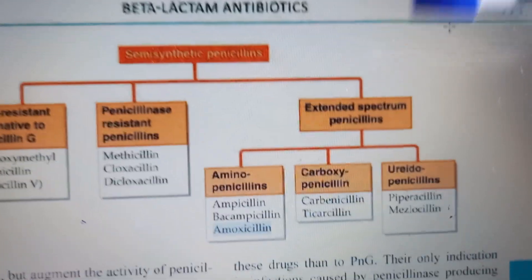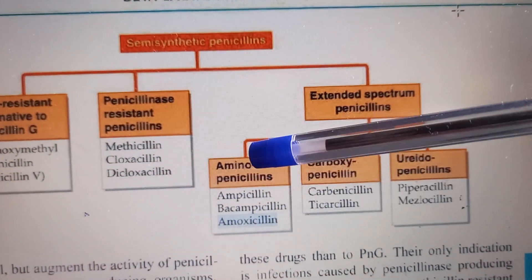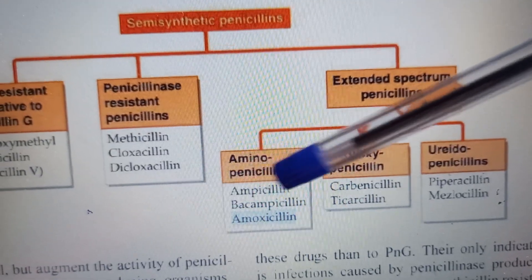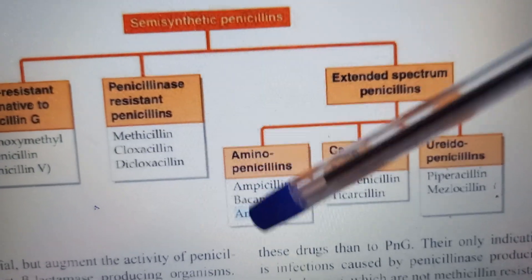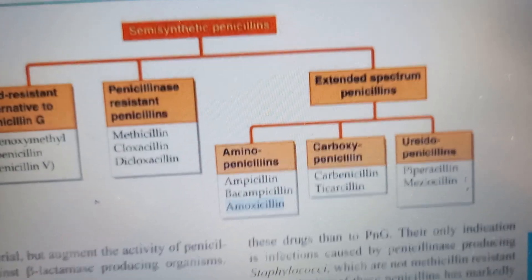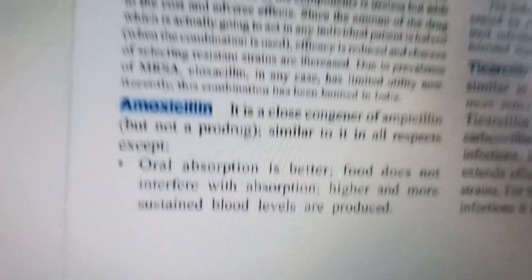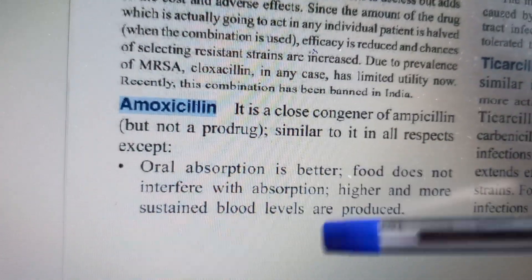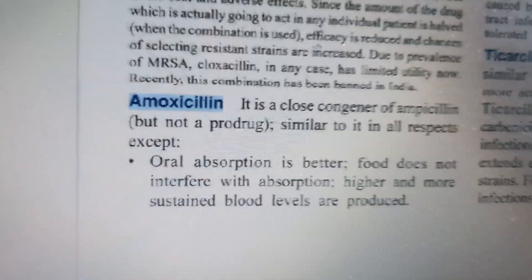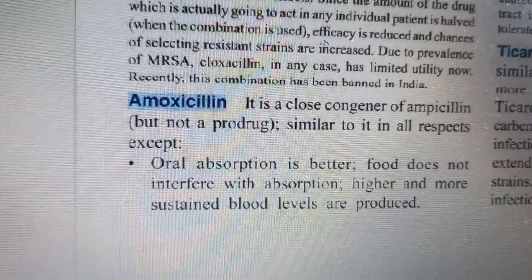Amoxicillin is a semi-synthetic, extended-spectrum penicillin. You can see it listed under aminopenicillins. Its close relatives include ampicillin — remember ampicillin and amoxicillin are very common. These extended-spectrum penicillins have effect on both gram-positive and gram-negative bacteria, though mainly gram-positive, extending into gram-negative.